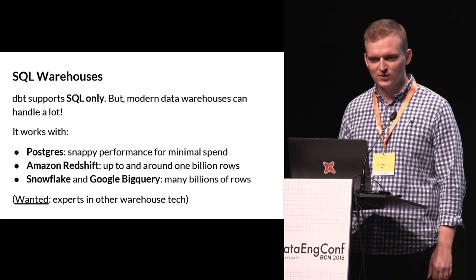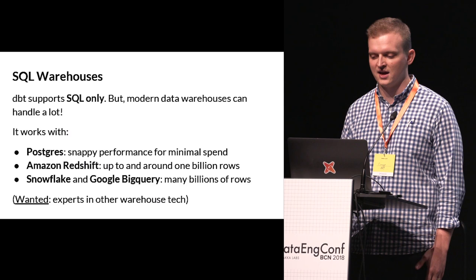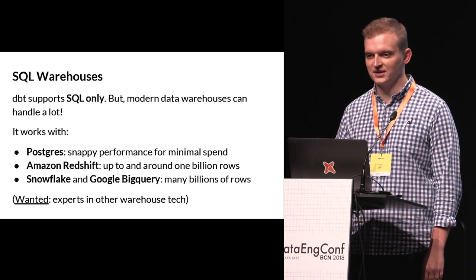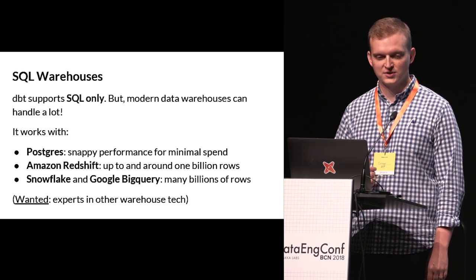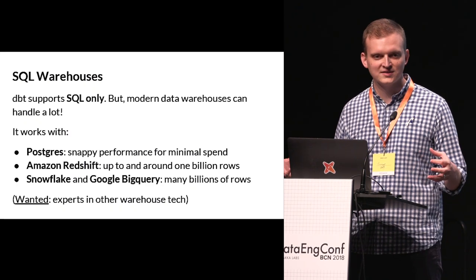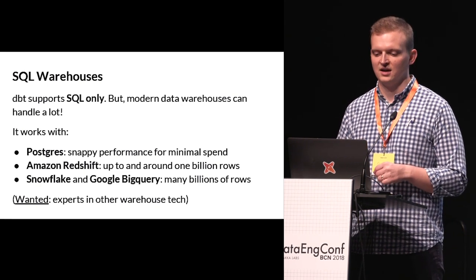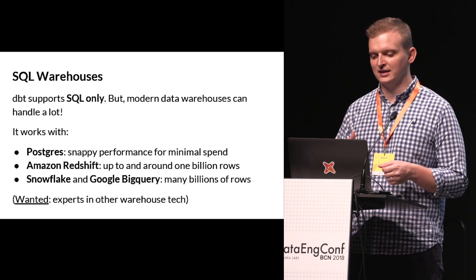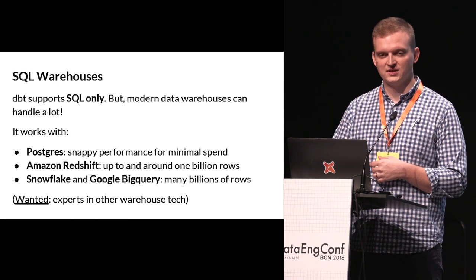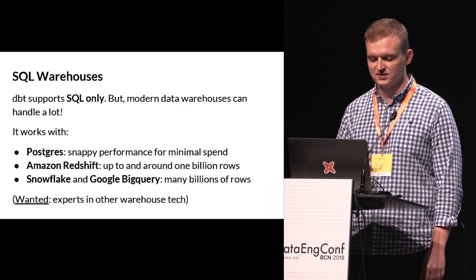DBT only supports SQL — it doesn't support Python, R, or Scala. This is in many ways a limitation of DBT, but it turns out that modern data warehouses can handle a lot. Right now it works with Postgres, Redshift, Snowflake, and Google BigQuery. We're ready to accept more plugins to connect to more databases — what we're really lacking is domain expertise in specific databases. For example, we'd love to be compatible with Flink, but we just don't have the local domain expertise to build that out and do it right. If you're interested in using this and don't see your warehouse on the list, come talk to me after.